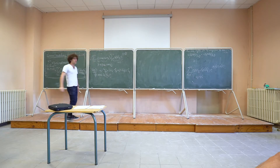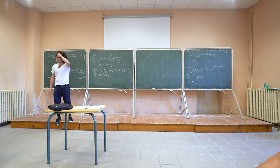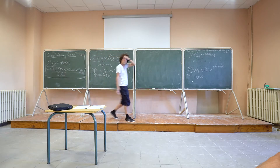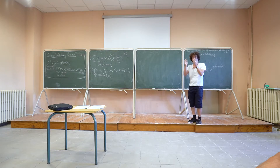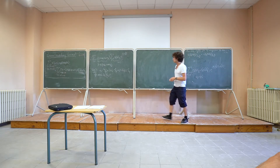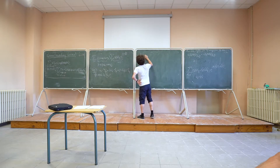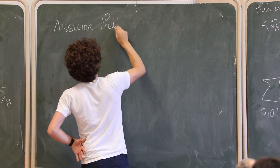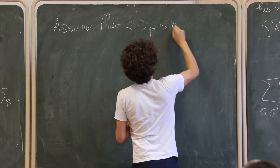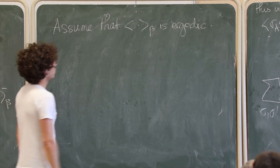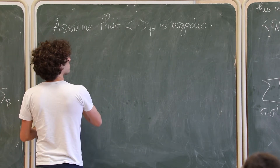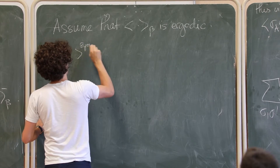To prove this, it suffices to prove it for ergodic Gibbs states, by the abstract theorem that the set of Gibbs states is a simplex and every translation-invariant Gibbs state decomposes uniquely into ergodic ones. So assume ⟨·⟩_β is ergodic.